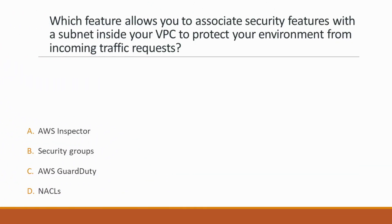Next question: Which feature allows you to associate security features with a subnet inside your VPC to protect your environment from incoming traffic requests? Options: A. AWS Inspector, B. Security Groups, C. AWS GuardDuty, D. NACLs. Correct answer is option D, NACLs, because a Network Access Control List is an optional layer of security for your VPC that acts as a firewall for controlling traffic in and out of one or more subnets.